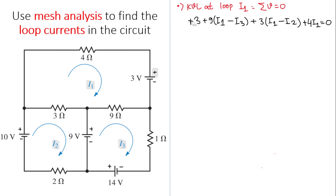All of that equals zero. Combining terms: 9 plus 3 plus 4 gives 16i1, minus 3i2, minus 9i3. Moving the constant to the right-hand side gives minus 3. This is equation number one.